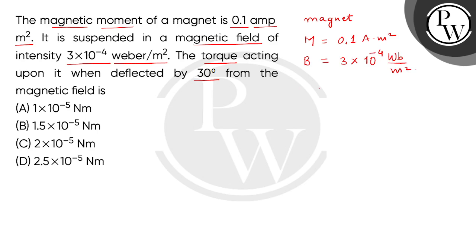Given that when the torque acts, it deflects 30 degrees from the magnetic field. This means the magnetic moment and magnetic field make an angle of 30 degrees.